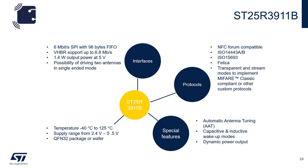The temperature range of the device is minus 40 degrees C to plus 125 degrees C, and the input supply range is 2.4 volts to 5.5 volts. The 3911B comes in a QFN32 package. The 3912 also comes in a wafer-level chip scale package. In addition to supporting standard protocols, the 3911B also has a transparent and stream mode to implement things such as MIFARE Classic or custom protocols.